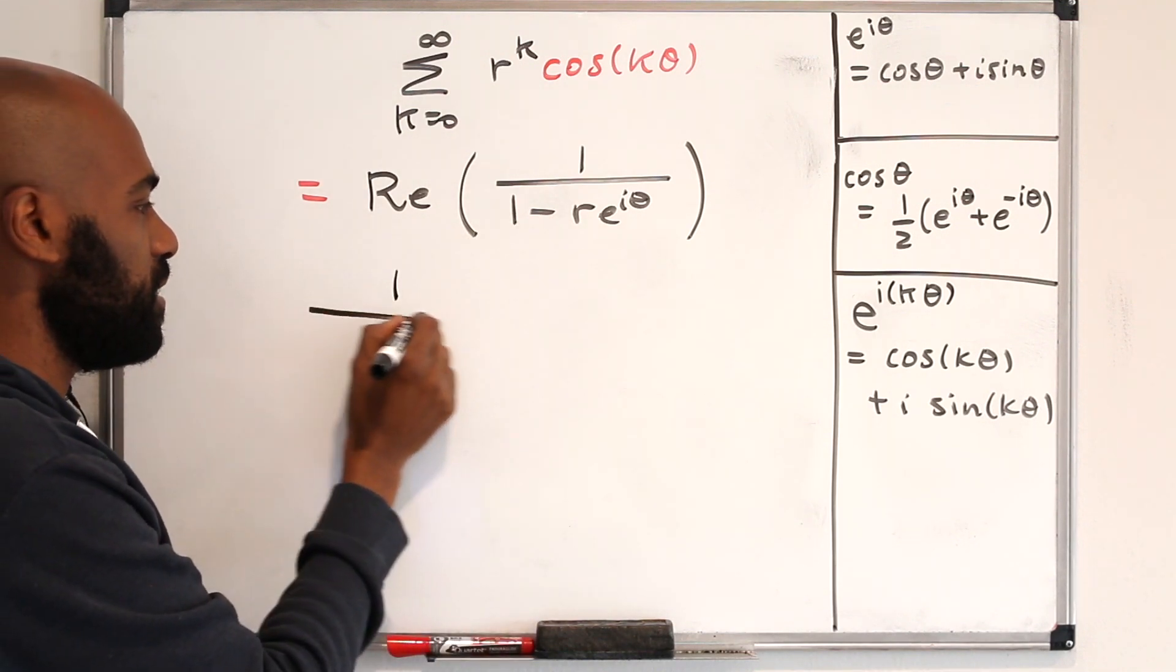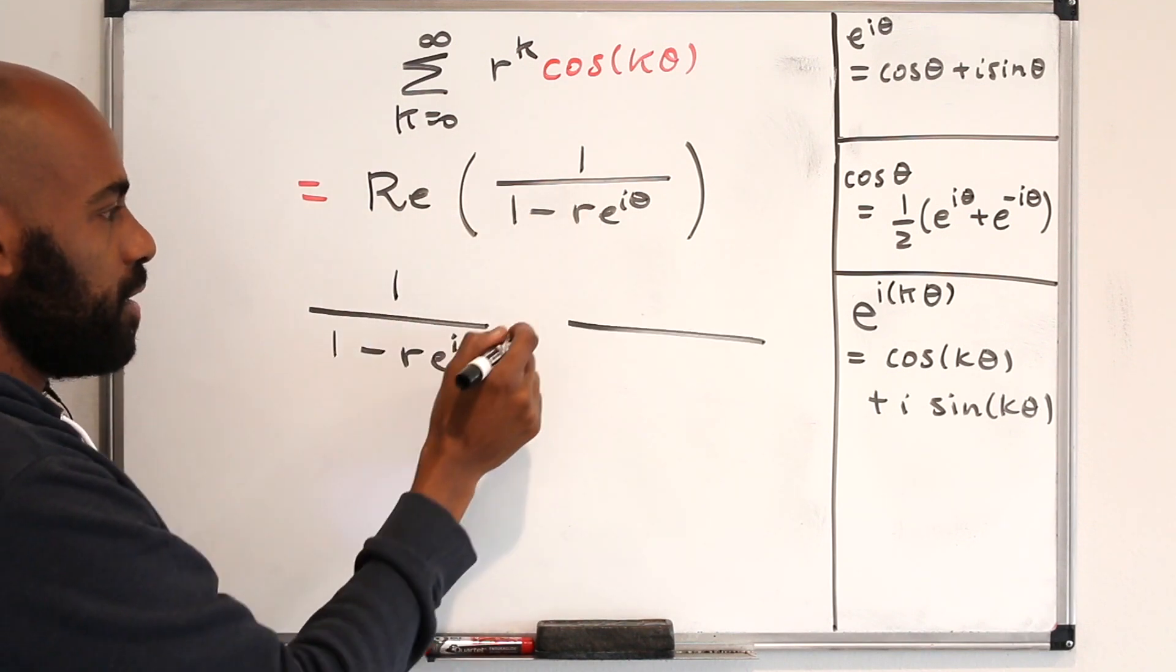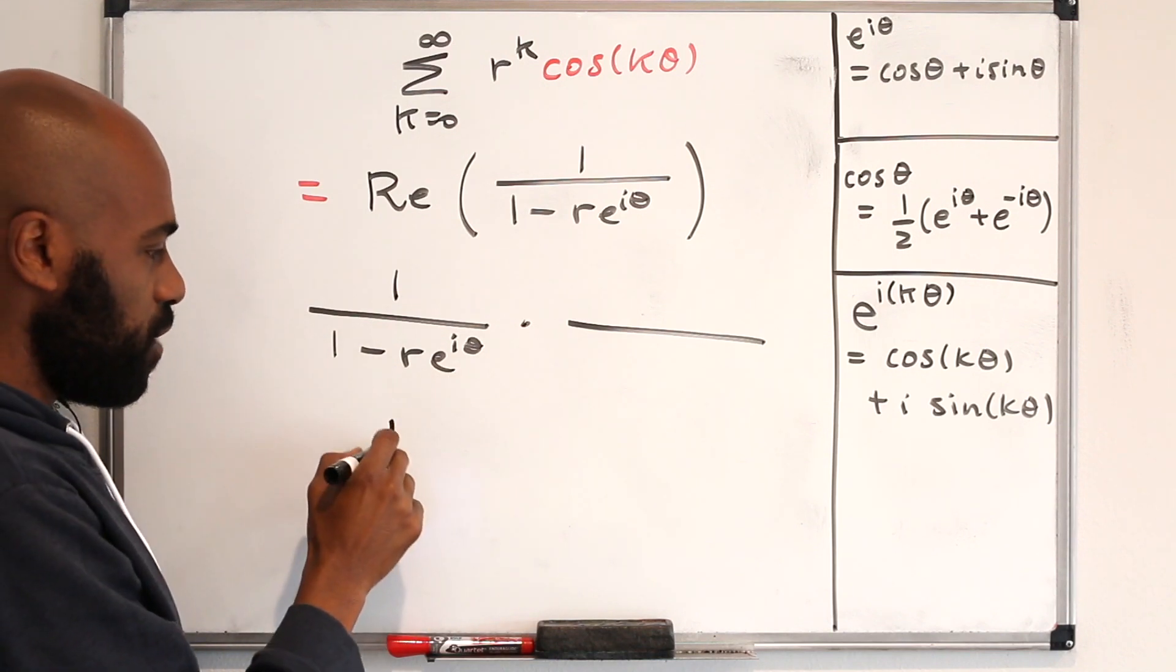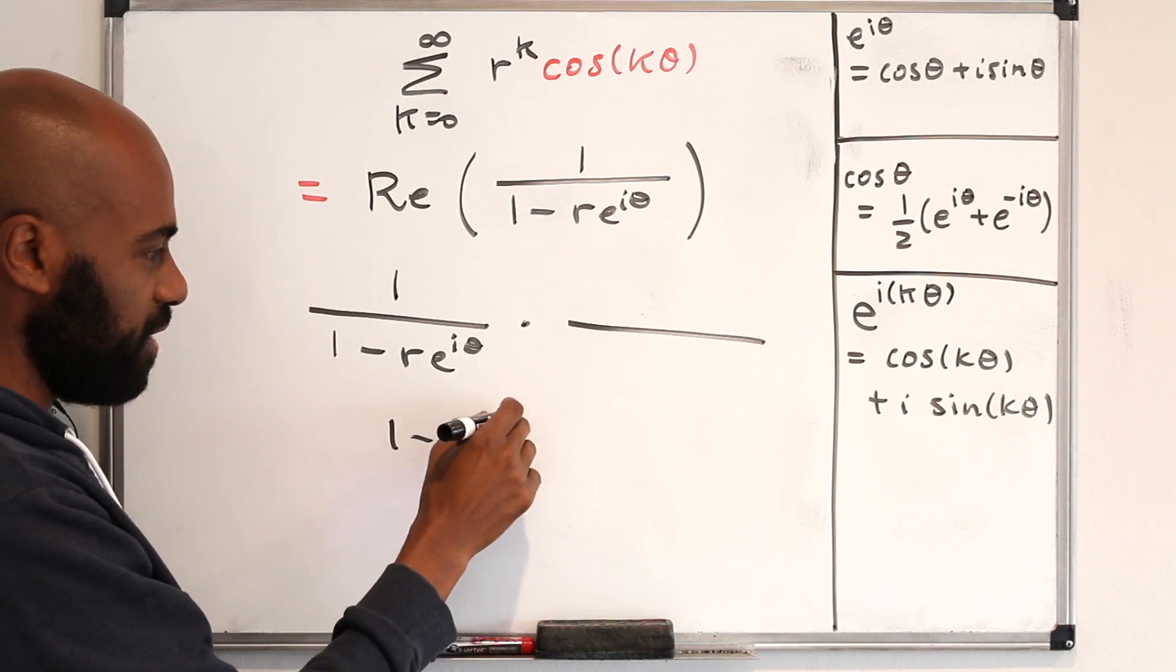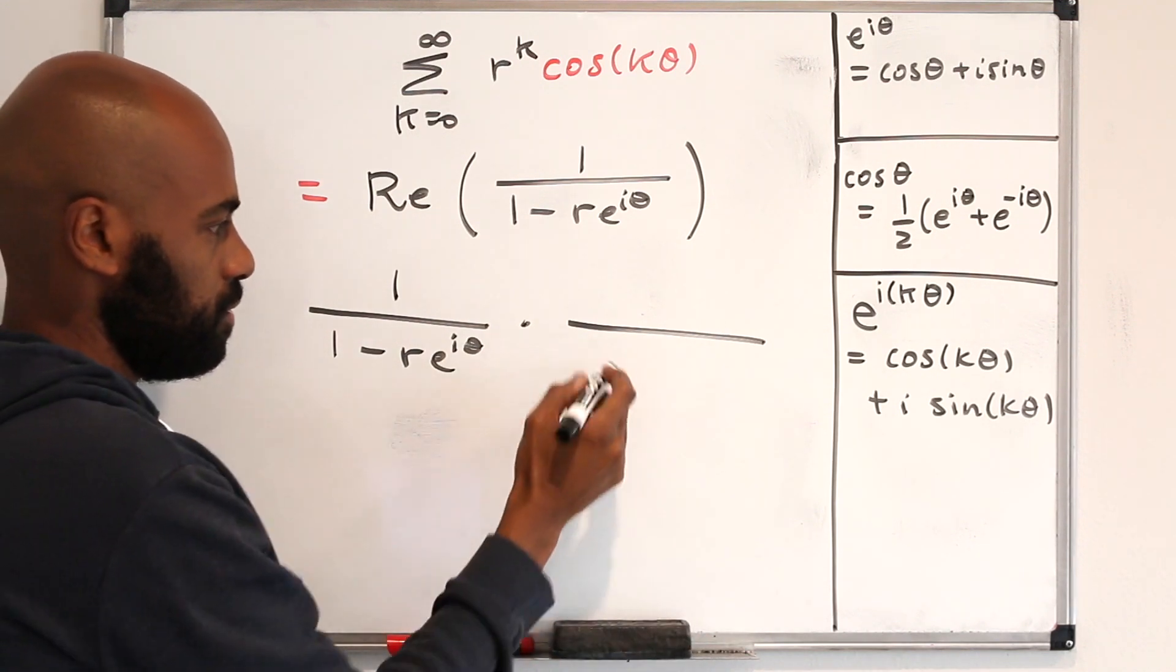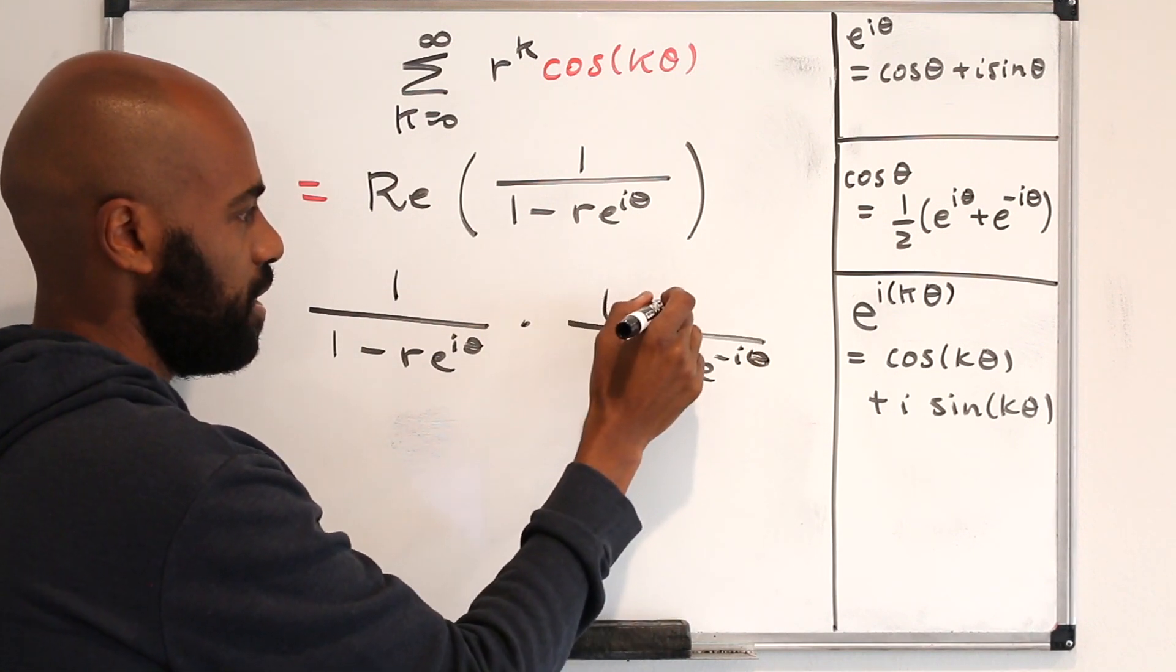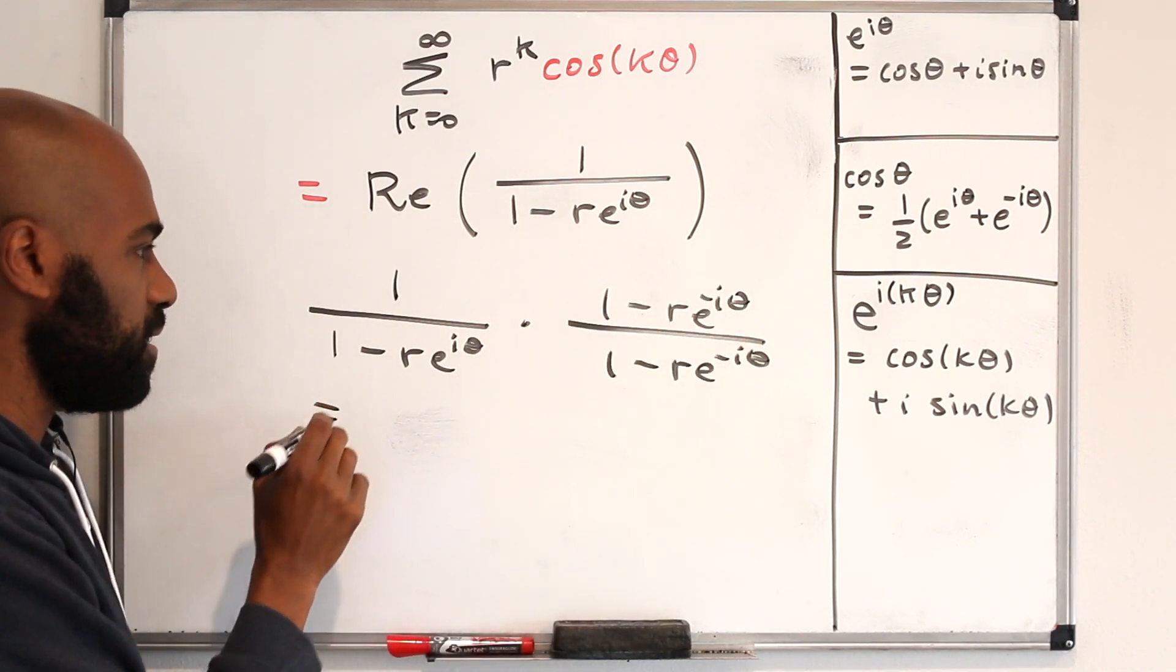So what we can do is clear that by multiplying by its complex conjugate. Okay, so that's the complex conjugate of the entire number in the denominator, which is 1 minus the complex conjugate of this thing, and that's r e to the negative i theta. So we'll have 1 minus r e to the negative i theta in the denominator, and we need that in the numerator as well.